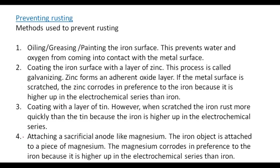The next thing we can do is attach a sacrificial anode like magnesium. The iron object is attached to a piece of magnesium. The magnesium corrodes in preference to the iron because it is higher up in the electrochemical series than iron. You need to be familiar with the various methods of preventing rusting.